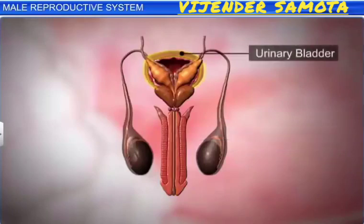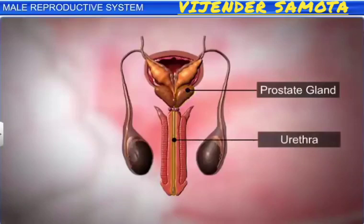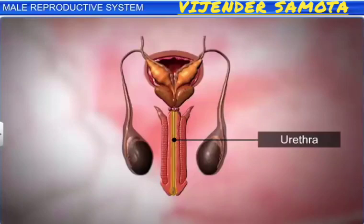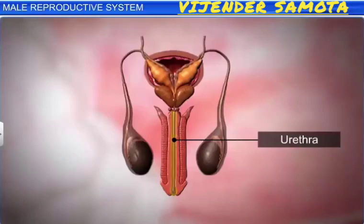The neck of the urinary bladder, ejaculatory duct, and prostate gland open into the urethra, or urinogenital canal. The urethra extends through the penis to its external opening called the urethral meatus, or urinogenital aperture. The urethra is the common passage for urine and semen.